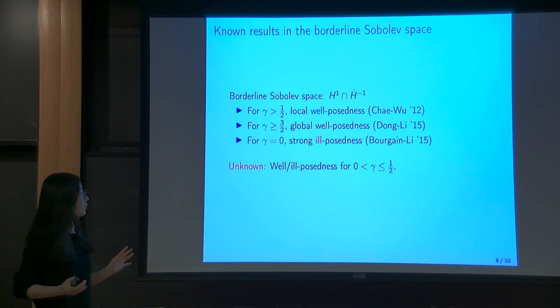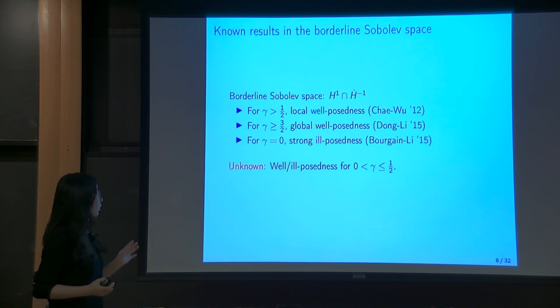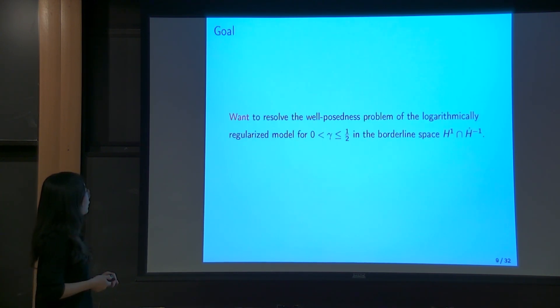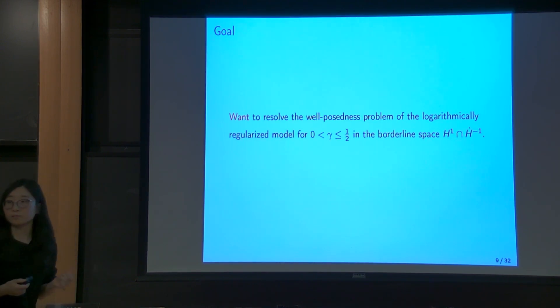So the remaining question is: we know when gamma is greater than 1/2 it is well-posed, and when gamma equals 0 it is ill-posed — what happens when gamma is in the intermediate region? Will it be well-posed or ill-posed? That is our main question in this talk.